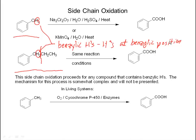In living systems, a very similar thing occurs. Toluene in a living system can undergo oxidation in the presence of cytochrome P450 and an enzyme to convert to benzylic acid. This serves as a mechanism for detoxifying things. Toluene is much less toxic than benzene because it has this oxidation pathway available to it.